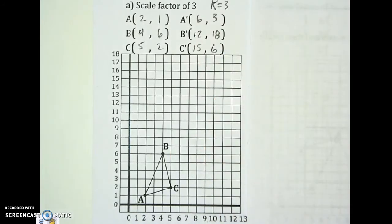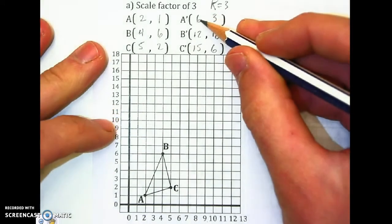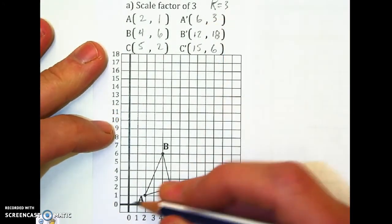Now all I need to do is replot those points, and it is dilated. So I'm going to A prime, 6, 3.